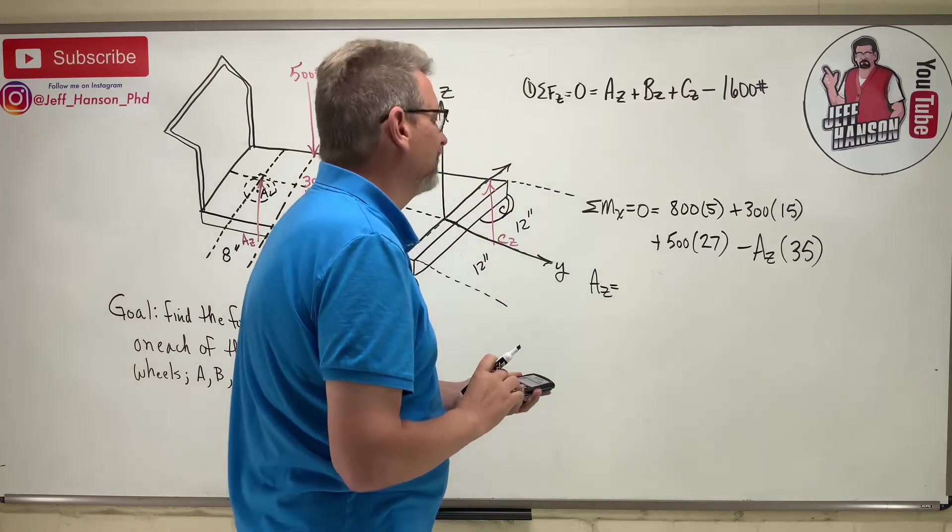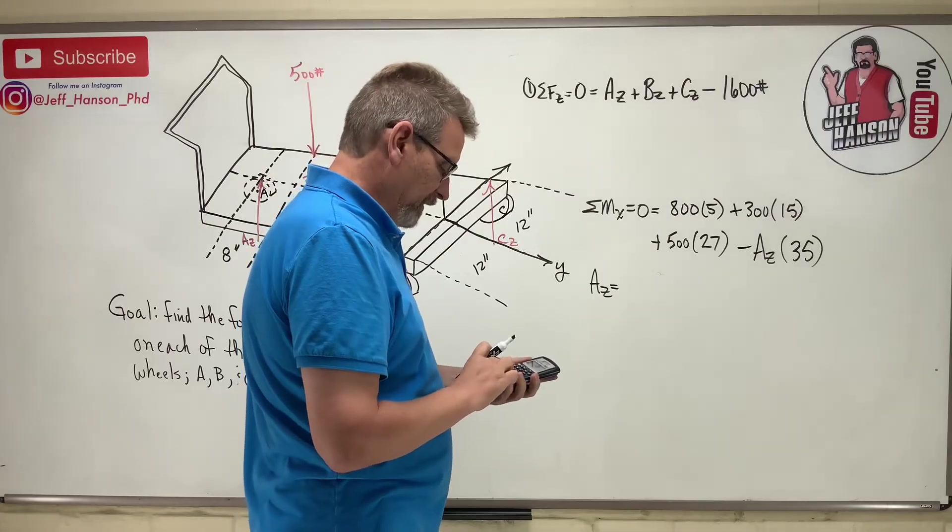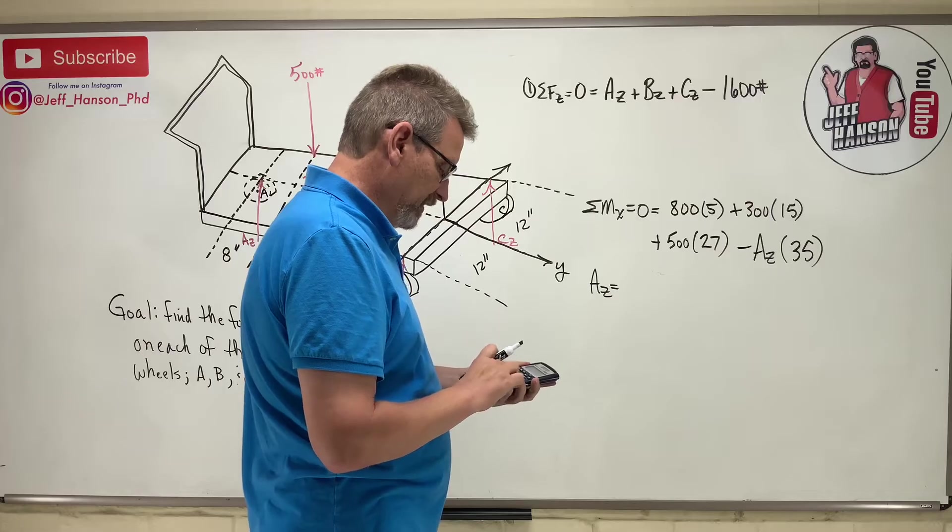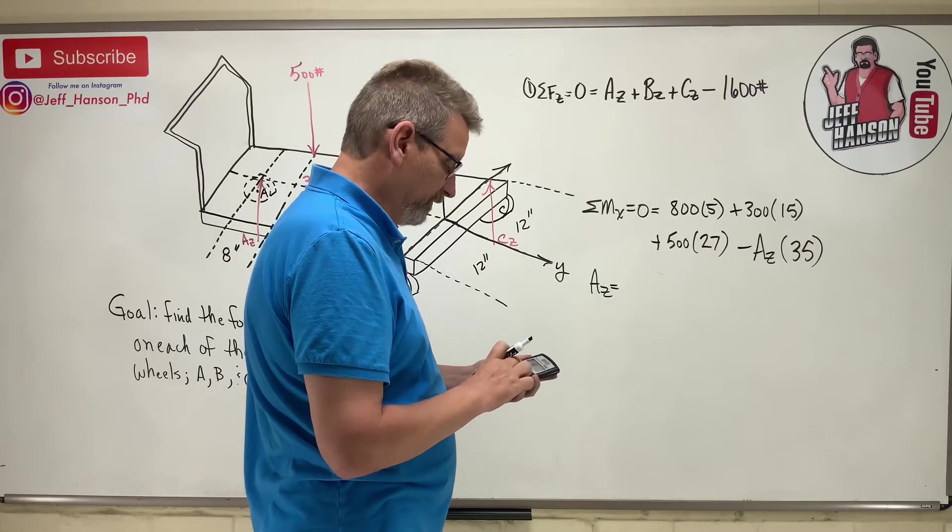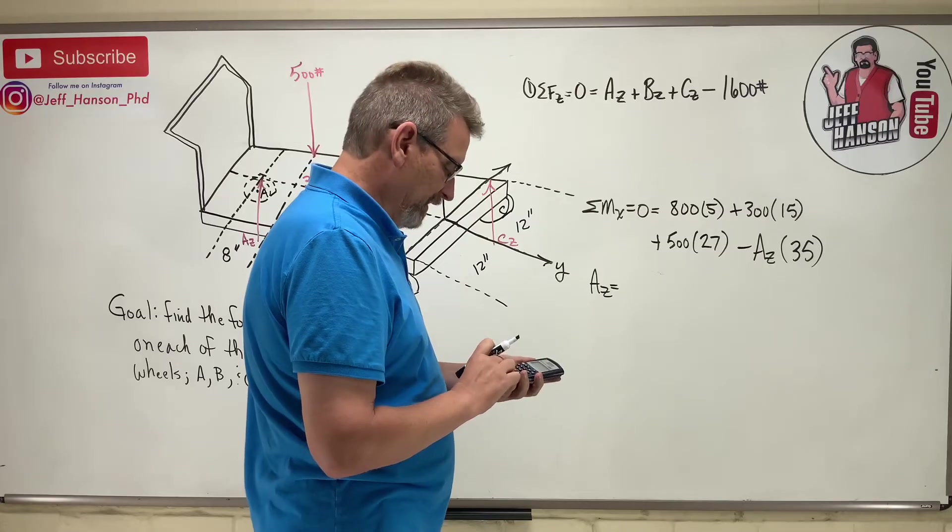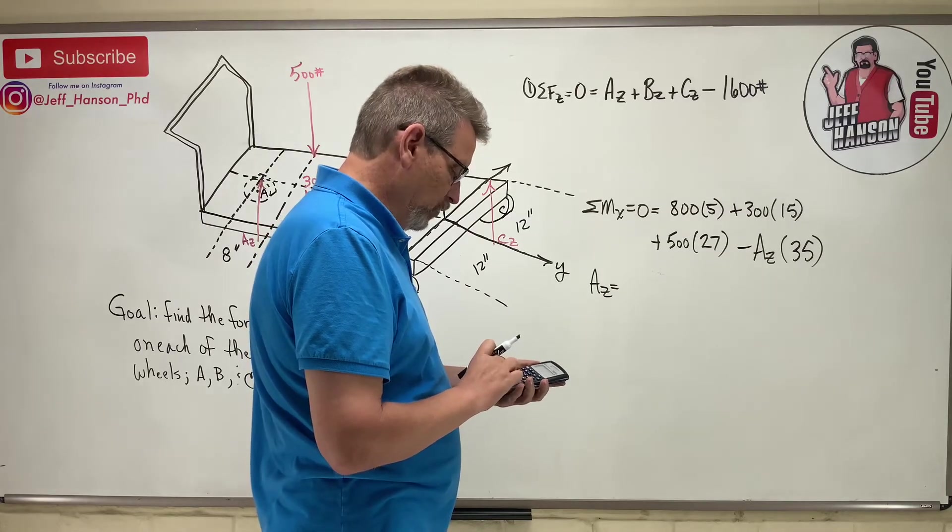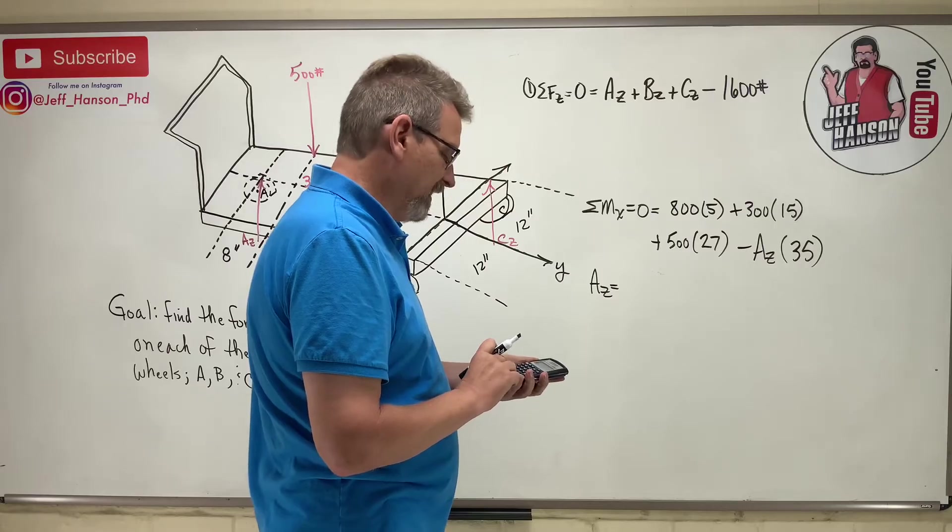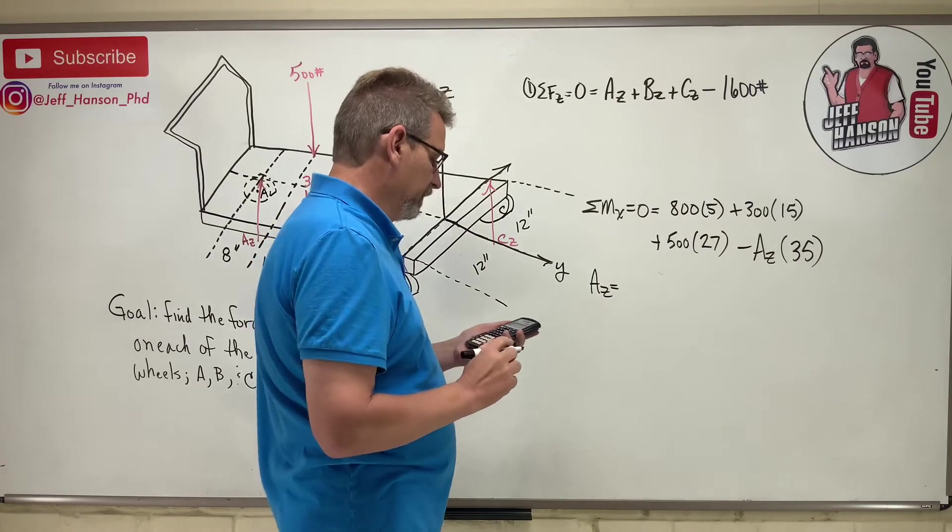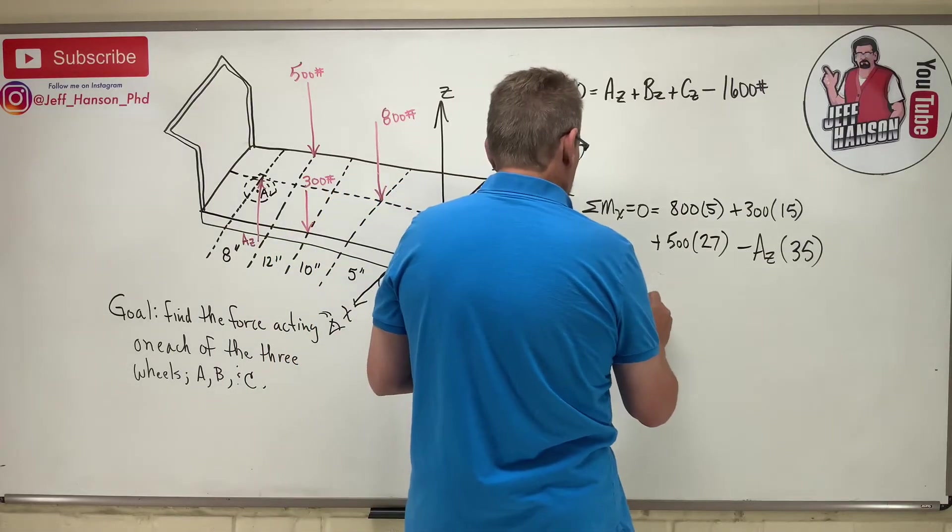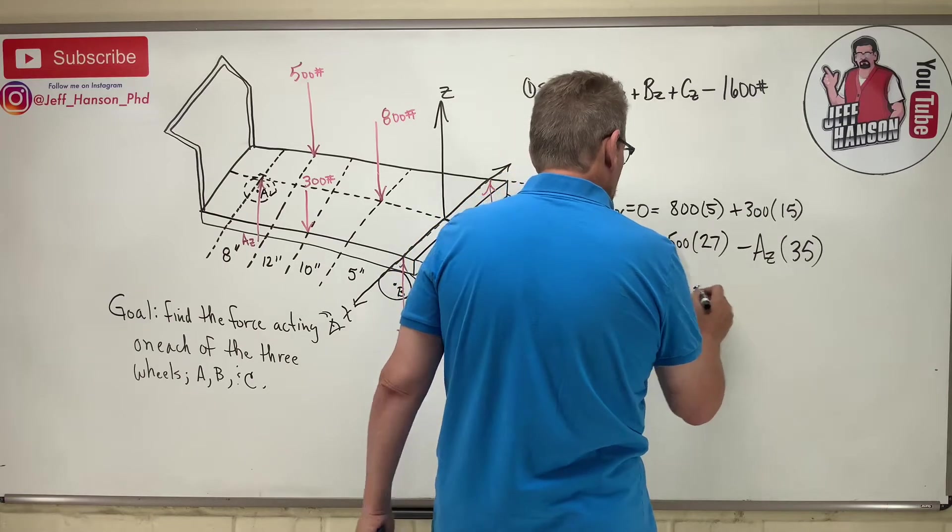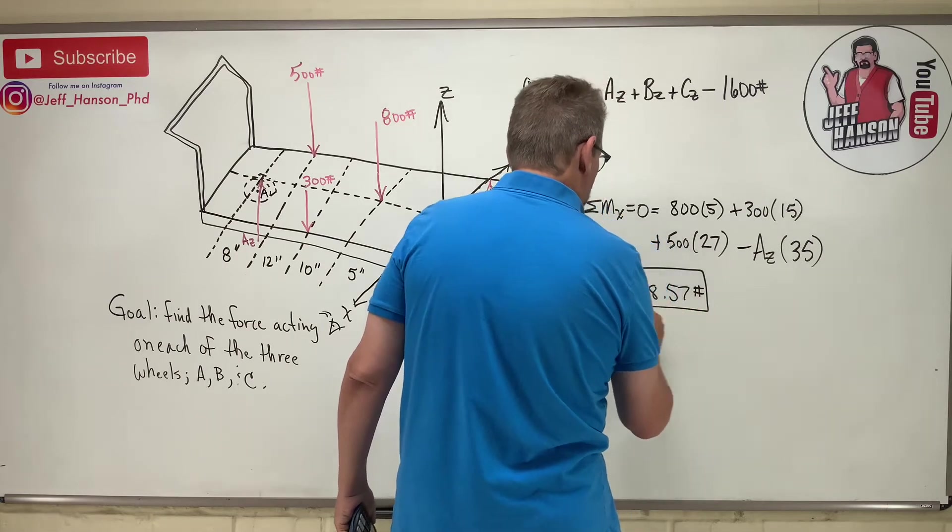All right, what is Az? It's going to be 800 times 5 plus 300 times, oh, 15, sorry, 15, plus 500 times 27 equals... divided by 35 equals...